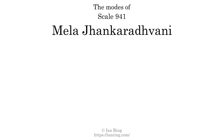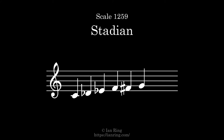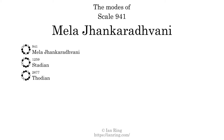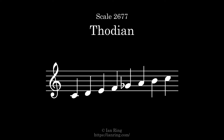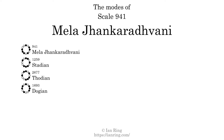This scale has seven modes. The first mode is itself. The second mode is scale 1259, also known as Stadion. It sounds like this. The third mode is scale 2677, also known as Thodion. It sounds like this. The fourth mode is scale 1693, also known as Doujin. It sounds like this.